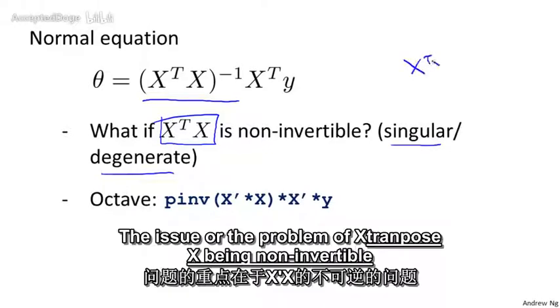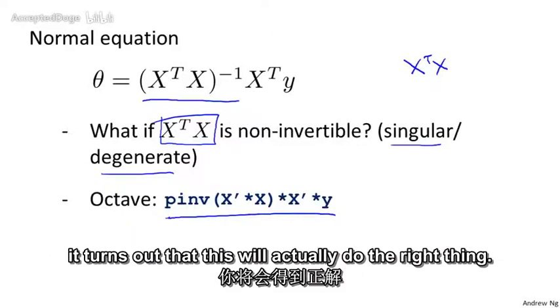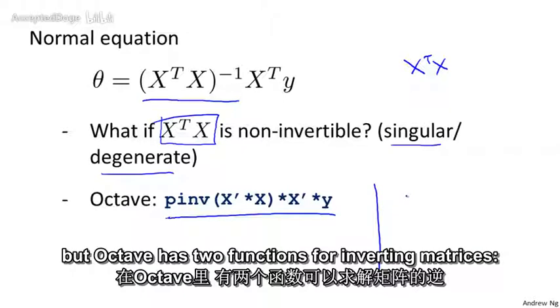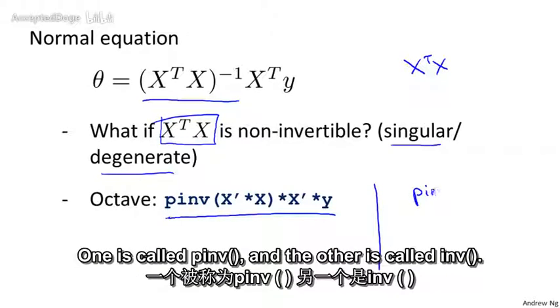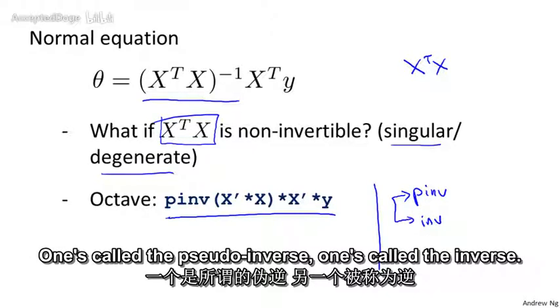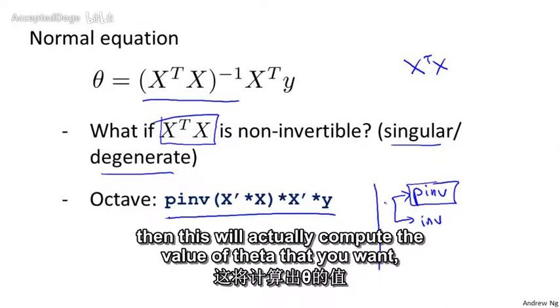The issue or the problem of X transpose X being non-invertible should happen pretty rarely. And in Octave, if you implement this to compute theta, it turns out that this will actually do the right thing. I'm getting a little technical now, and I don't want to go into the details. But Octave has two functions for inverting matrices. One is called pinv, and the other is called inv. And the differences between these two are somewhat technical. One's called the pseudo-inverse, one's called the inverse. But you can show mathematically that so long as you use the pinv function, then this will actually compute the value of theta that you want,